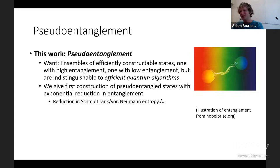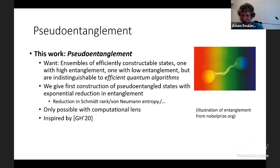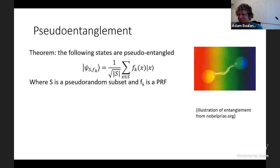We not only define this notion of pseudo-entanglement, but also give the first construction of pseudo-entangled states with an exponential reduction in entanglement. We achieve this in a variety of measures—in particular, an exponential reduction in Schmidt rank, which implies exponential reductions in von Neumann entropy or any other entropy measure. This new construction is only possible through a computational lens, and our work is inspired by prior work of Georgiou and Hoban, which considered a similar notion.